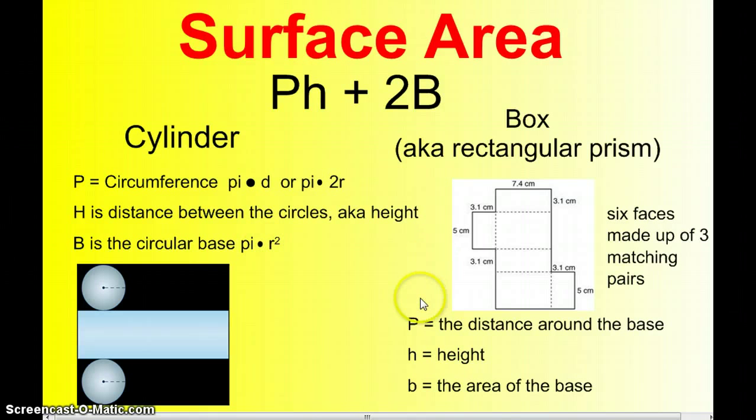For a rectangular prism, the p is the distance around the base of the box. The h is the height. And b is the area of the base, or the length times the width.